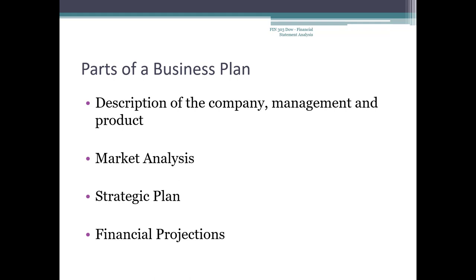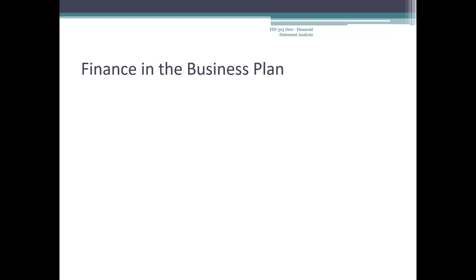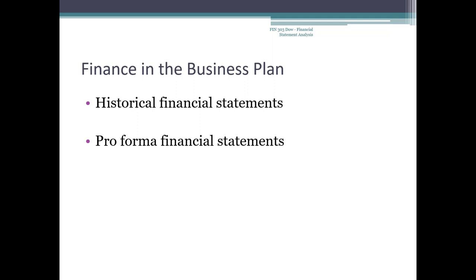The financial plan will generally provide three kinds of information: historical financial statements, estimates of what the financial statements will look like in the future, known as pro-forma financial statements, and some analysis of the financial information including appropriate financial ratios. You should be familiar with financial statements from your financial accounting class, and we will discuss the use of financial ratios in a later presentation.